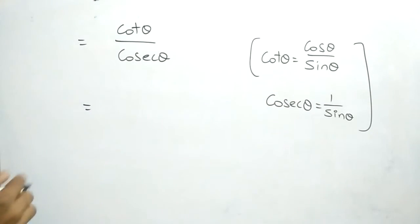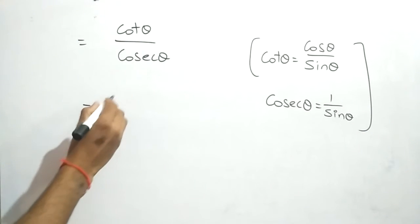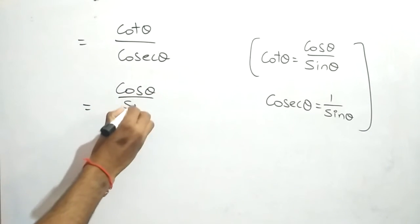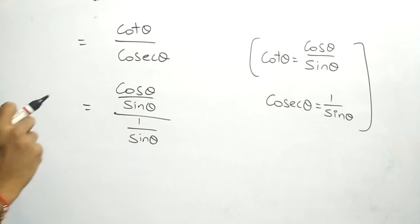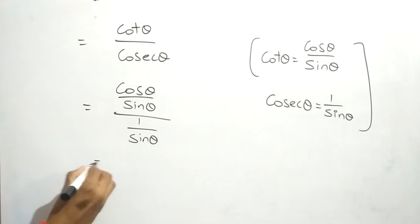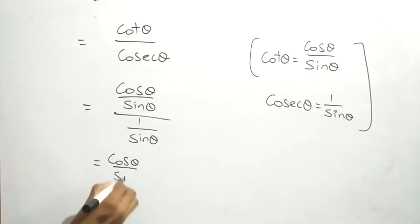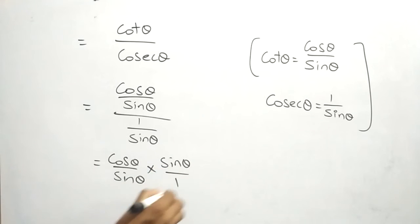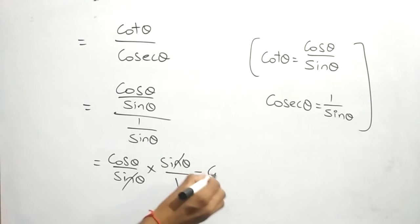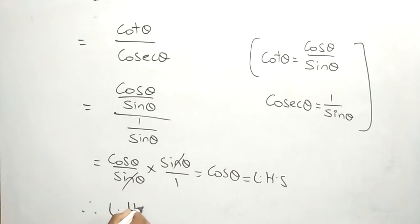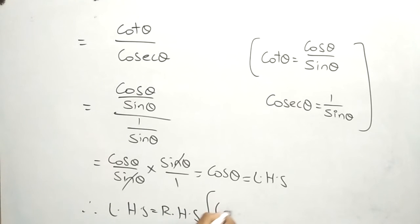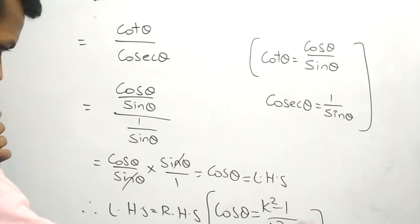In place of cotθ we write cosθ/sinθ, and in place of cosecθ we write 1/sinθ. So we have (cosθ/sinθ) ÷ (1/sinθ), which equals cosθ/sinθ × sinθ/1. The sinθ terms cancel, giving the final answer cosθ, which equals LHS. Therefore LHS = RHS, and we have proved that cosθ = (k² - 1) / (k² + 1).